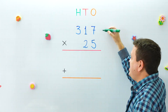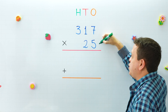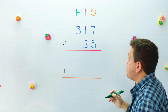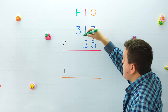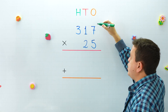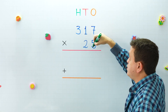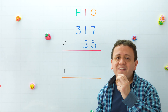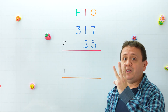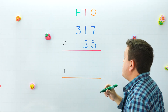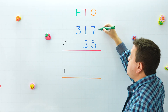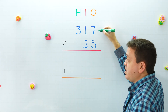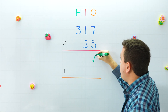In the following example we have 317 times 25. Remember to write one number above the other so the ones and tens places are lined up. To multiply by a two-digit number you follow three steps. In the first step we're going to multiply 317 by five ones.